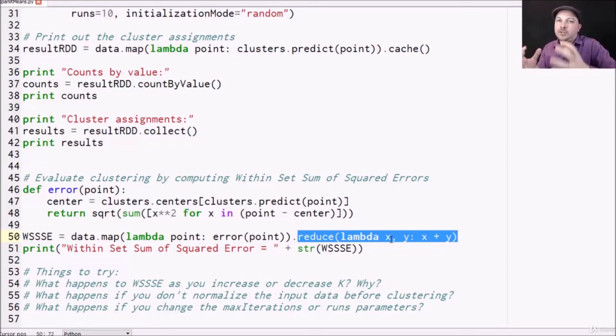This reduce function is saying how do I take any two values, intermediate results from this operation and combine them together.